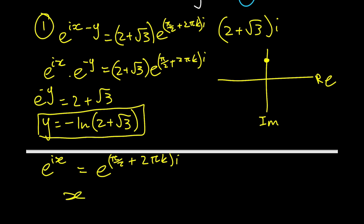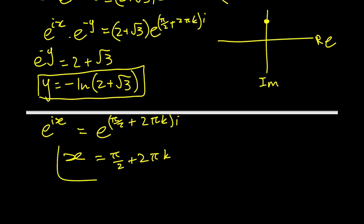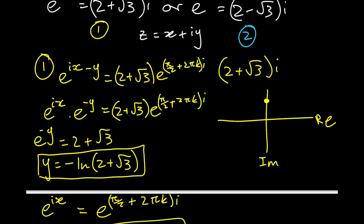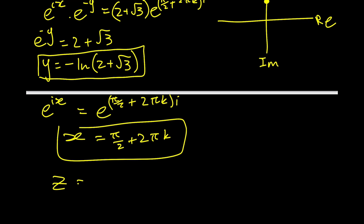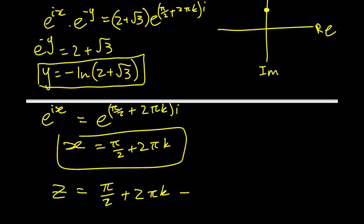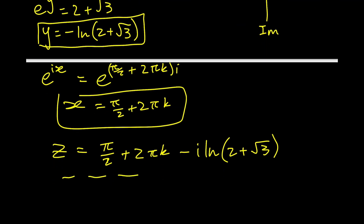So x is equal to π/2 plus 2πk. Since we said z equals x plus iy, our first solution for z is π/2 + 2πk, plus i times the negative of negative ln(2 + √3), which gives us z equals π/2 + 2πk + i·ln(2 + √3).